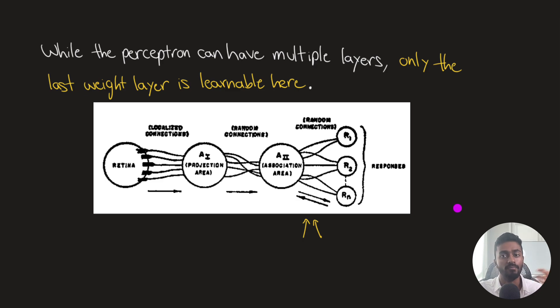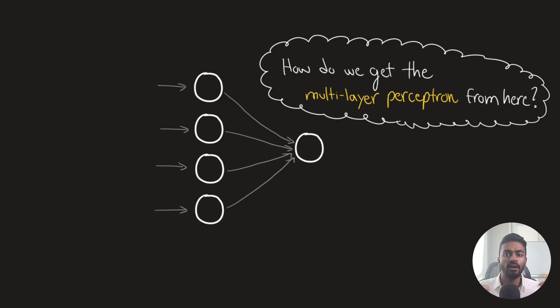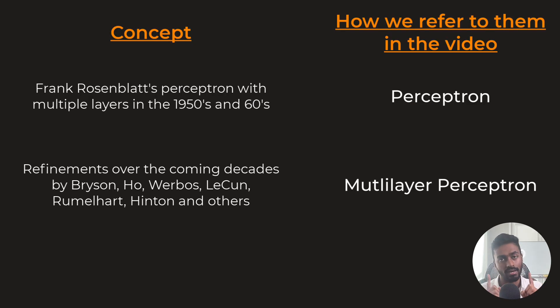Now while the perceptron can have multiple layers, so this is a multi-layer perceptron that was created by Frank Rosenblatt, it is really only this last layer over here that has learnable parameters. Now, how do we get the multi-layer perceptron? So an important note I want to make in this video is that in 1958, Frank Rosenblatt introduced indeed a multi-layer perceptron, but only the last layer was learnable. However, that is not specifically the architecture that we refer to as the multi-layer perceptron today.